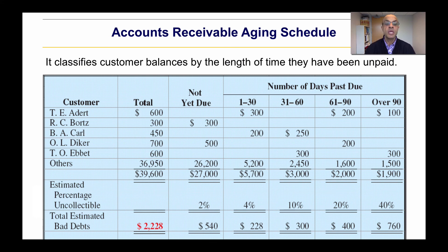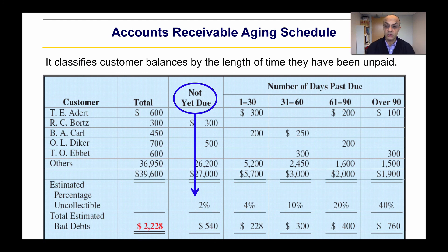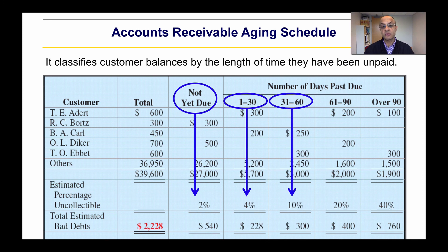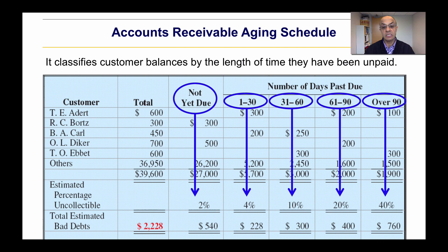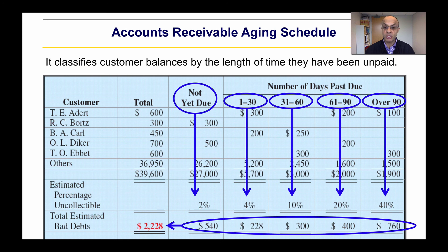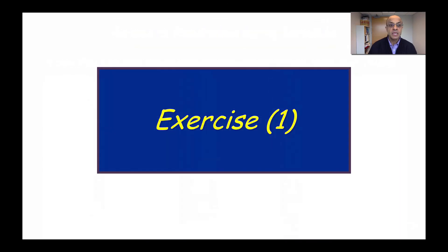For the accounts receivable method, we might use the accounts receivable aging schedule to calculate the allowance. We have accounts receivable from different due dates: not due at two percent, one to thirty days at four percent, thirty-one to sixty days at ten percent, sixty-one to ninety days at twenty percent, and over ninety days at forty percent. We multiply the totals by those percentages and then consider the prior debit or credit balance.